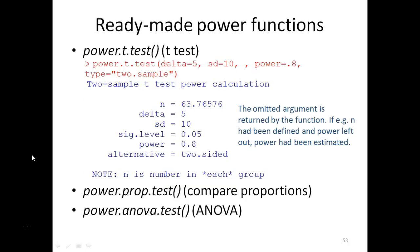In R, there are a few ready-made power functions to calculate the power of specific statistical tests, for example the power.t.test, which calculates the power of a t-test. You use it by providing the power.t.test with the assumptions that you make about the effect size (that's delta), the standard deviation in the two groups that you are comparing, the power, and the type of test you are going to perform: a two-sample or one-sample test.